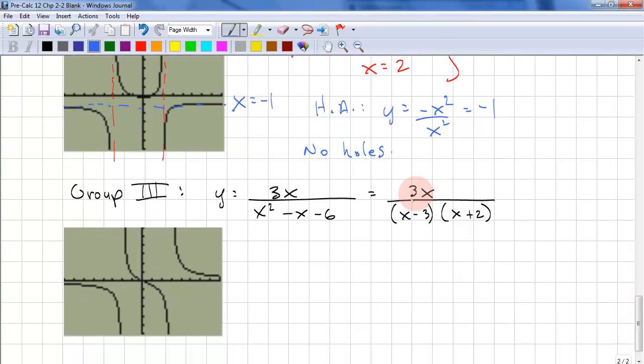Group 3. Here we have it factored out and there's no common terms. We have non-permissible values: x equals 3, x equals negative 2. Let's look at the vertical asymptotes. Here we have x equals negative 2, x equals 3. These happen to be our vertical asymptotes as well.